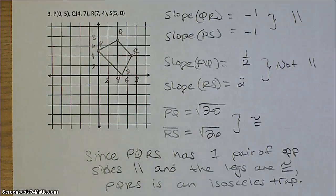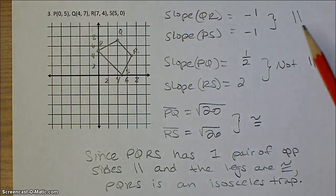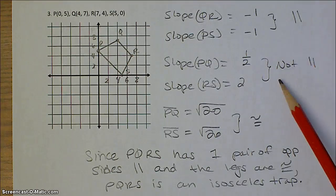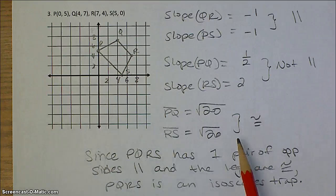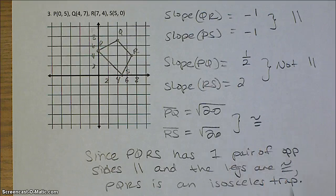Question number 3, really similar to number 2. You've got one pair of opposite sides that are parallel and one that are not, so that's how we immediately know it's a trapezoid. And then if you do test the distances of these legs, PQ and RS, you will find that they are in fact congruent. So therefore, the best name for this quadrilateral is an isosceles trapezoid.